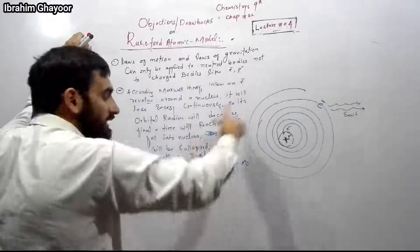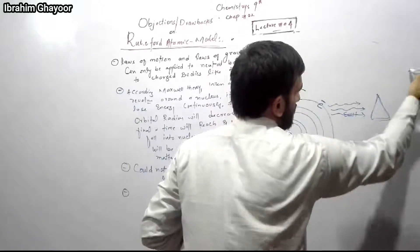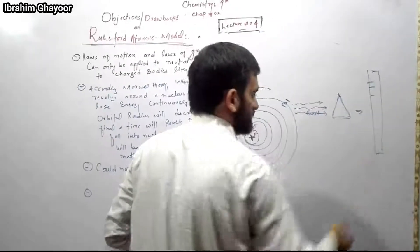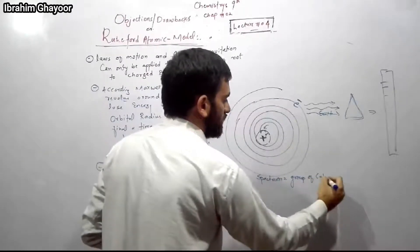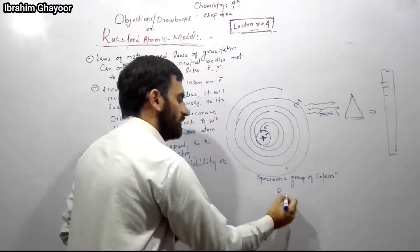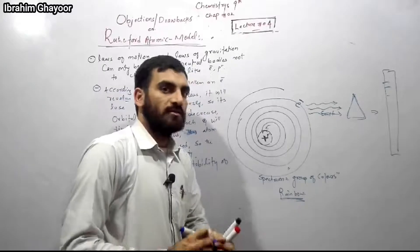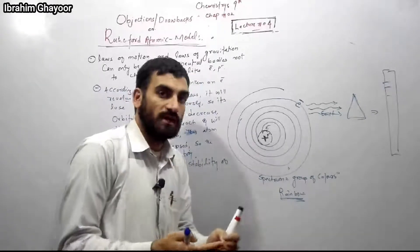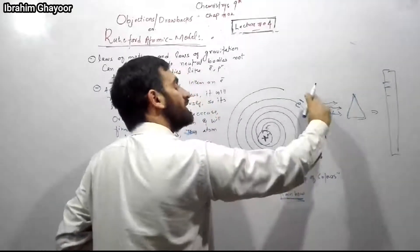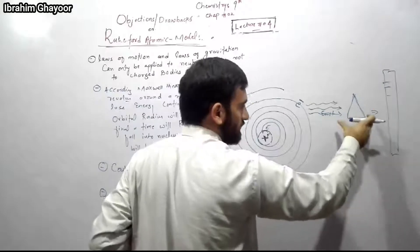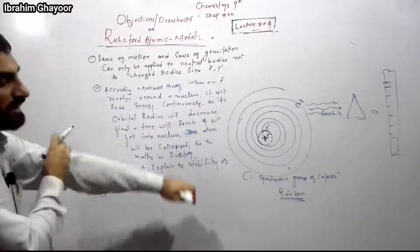Second point: if the electron continuously radiates energy, and we analyze the emitted radiation through a prism, we should see a continuous spectrum. A continuous spectrum is a group of colors, like the rainbow, which shows red, orange, yellow, green, blue, and violet together. If atoms lose energy continuously through radiation, the spectrum should be continuous.